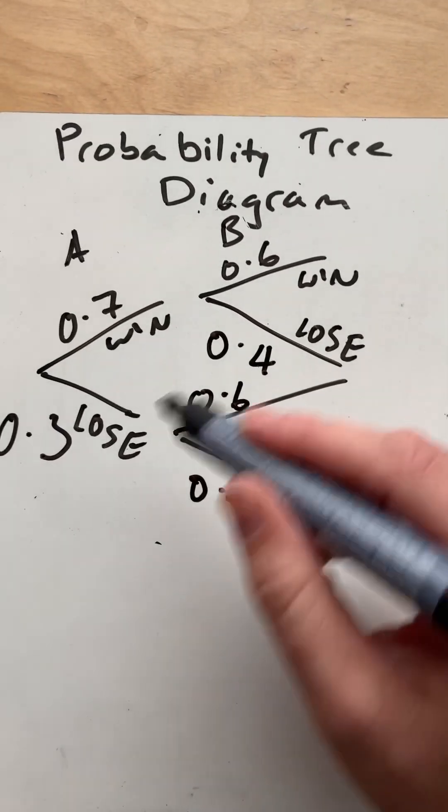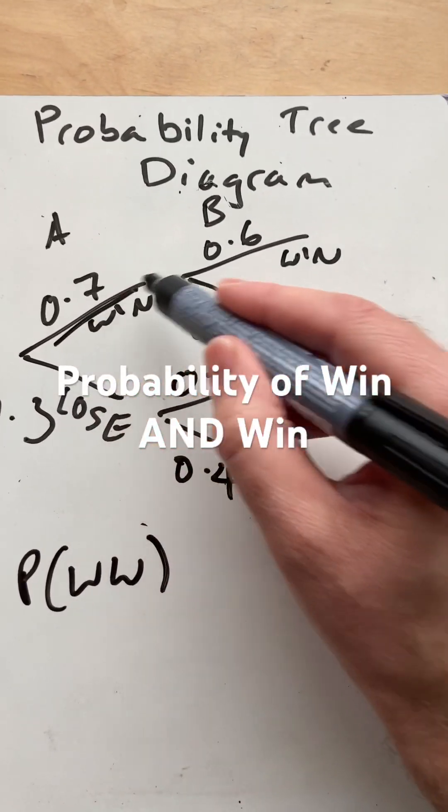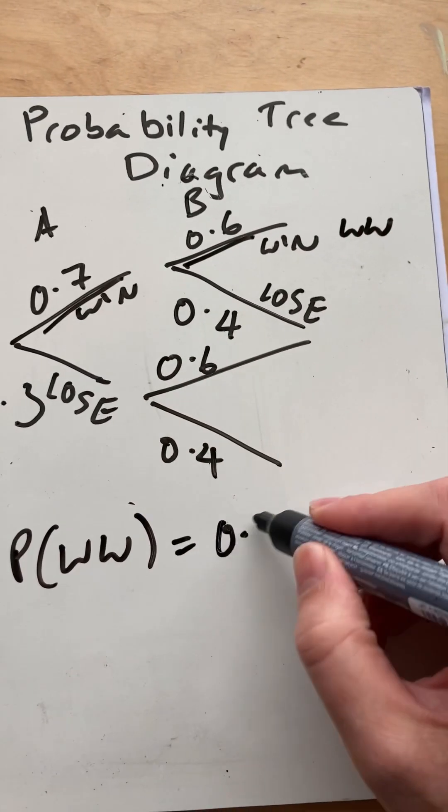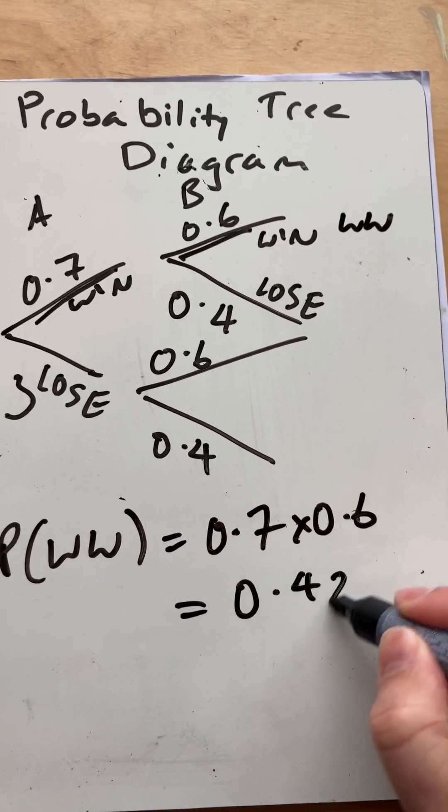Now, we can also do the AND law of winning and winning, going across there and there. So winning, winning would be 0.7 times 0.6, which would be 0.42.